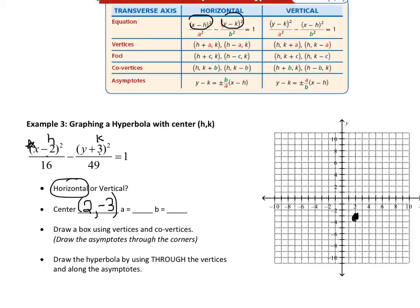Next we need a and b. a is always first — square root gives plus or minus 4. b squared is always second — square root gives plus or minus 7. We count from the center: the 4 was under the x, so we count left and right 4; the 7 came from under the y, so we count up and down 7. From that center dot: right 4, left 4, up 7, and down 7.